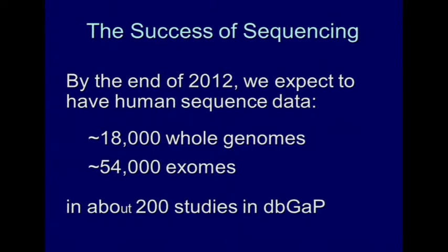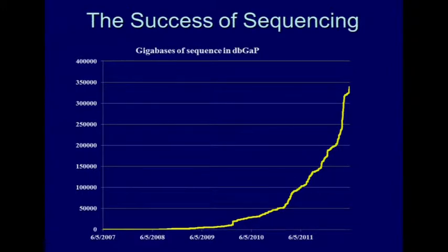Basically this is a problem arising from success. There's a whole bunch of human genome sequence data being produced. As of June, the estimate was that by the end of this year we'd expect to have 18,000 whole genomes and 54,000 exomes in at least 200 studies — your requisite super-exponential growth of sequence data. This has been a smashing success of Jeff Schloss in the sequencing technology program, but then you figure out: okay, what do we do with all of this?